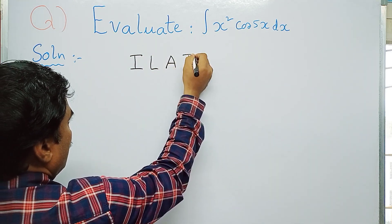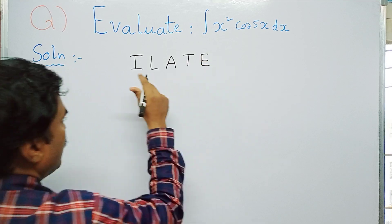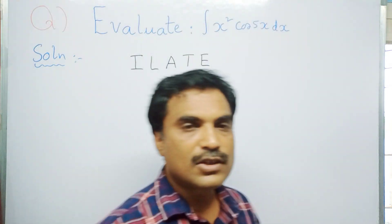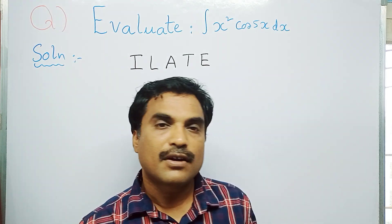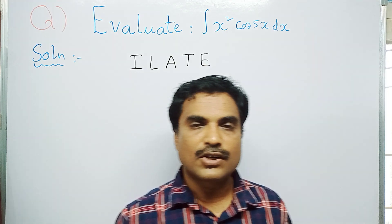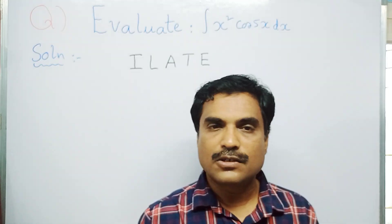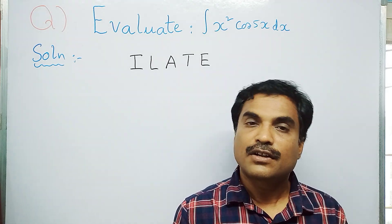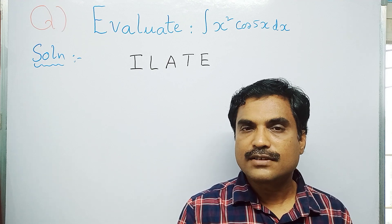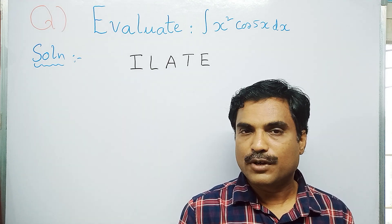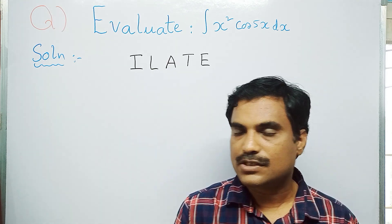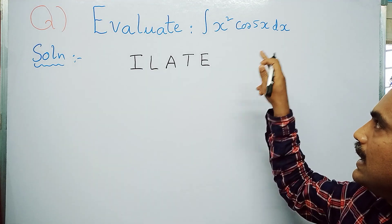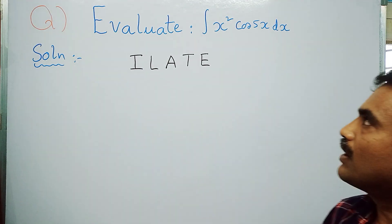Here, I stands for inverse trigonometric functions, L stands for logarithmic functions, A stands for algebraic functions, T stands for trigonometric functions, and E stands for exponential functions. The integrand consists of two functions: x² and cos 5x.